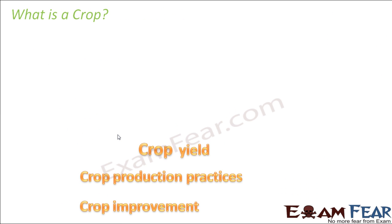Now let us start understanding the three important steps — the three important focus areas in this lesson. We are going to talk about crop yield, crop production, and crop improvement.